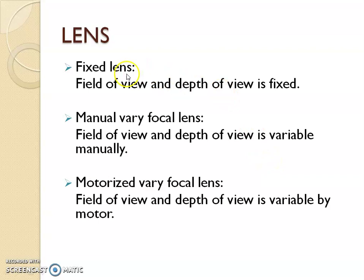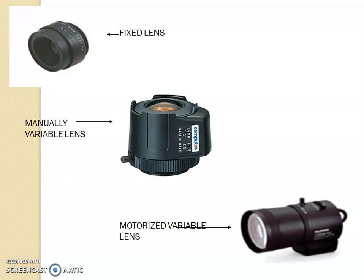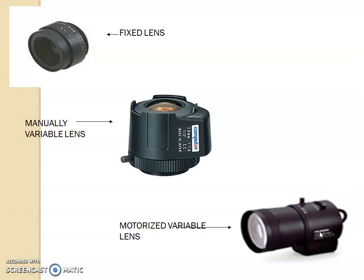Coming to lens — there are fixed lenses, manual varying focal lenses, and motorized varying focal lenses. These are very common in modern cameras. With a manual varying focus lens, the camera has to be manually adjusted to find the desired view. With a motorized lens, the field of view and depth can be varied automatically by a motorized mechanism, which can be done remotely without having to go manually and adjust the lens.